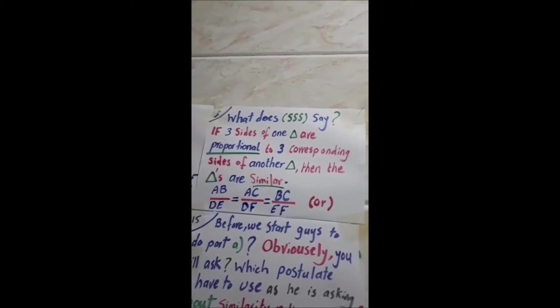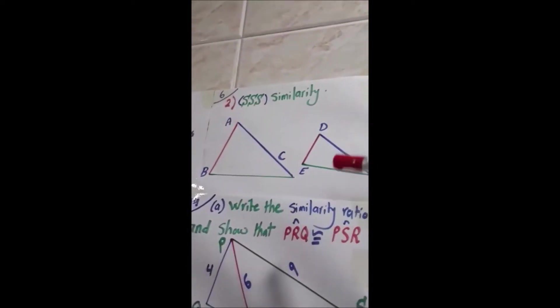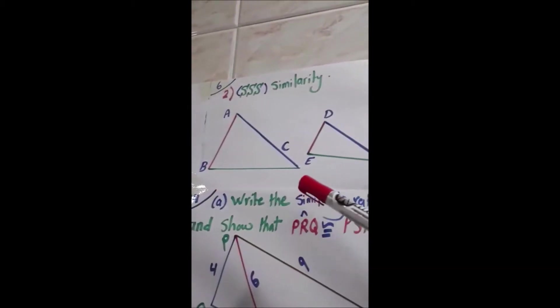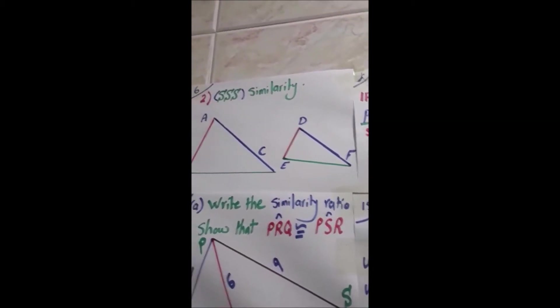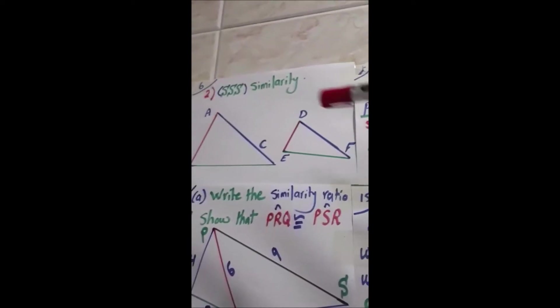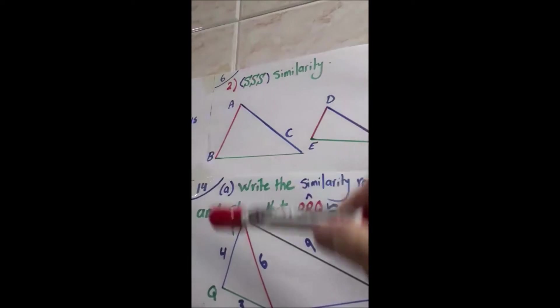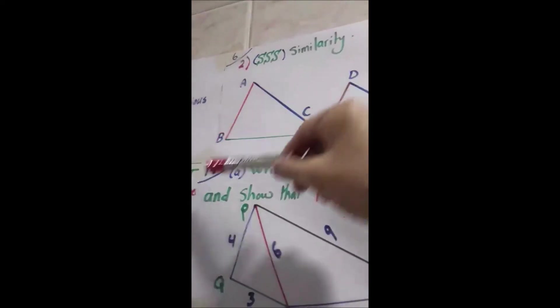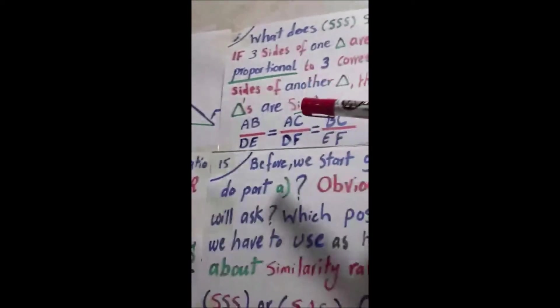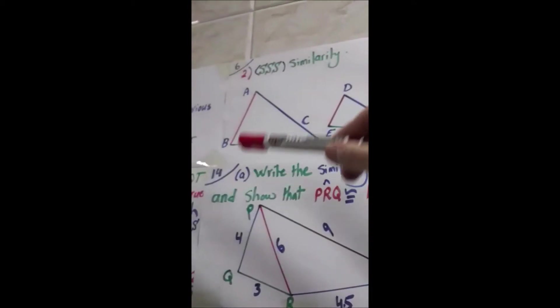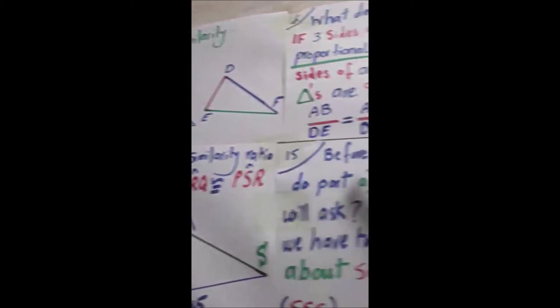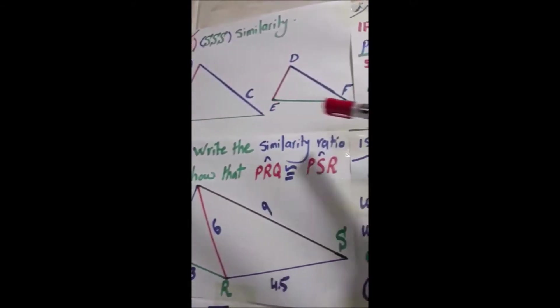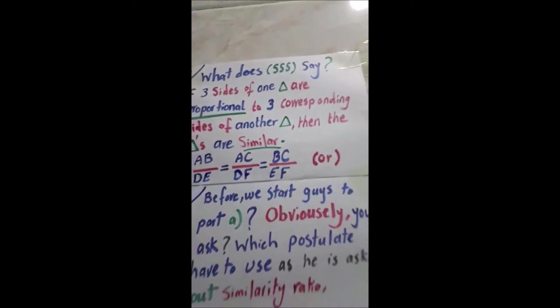You may ask: what is the meaning of corresponding sides? That means AB corresponds with DE, AC corresponds with DF, and BC corresponds with EF. So AB over DE — the red one with the red one — equals AC over DF — the blue one with the blue one — equals BC over EF — the green one with the green one. This is what we call corresponding sides.